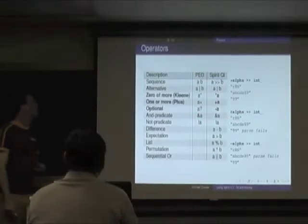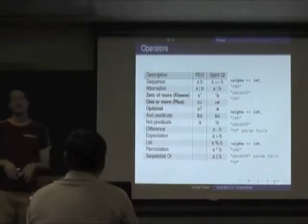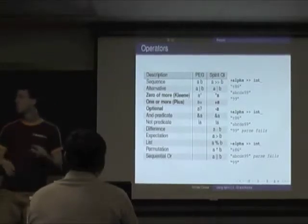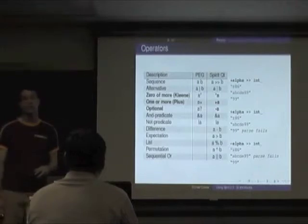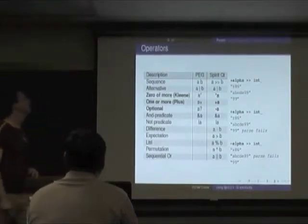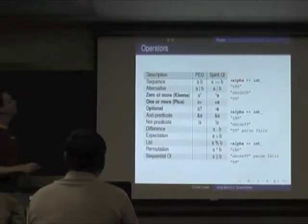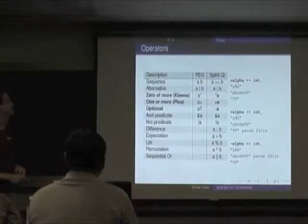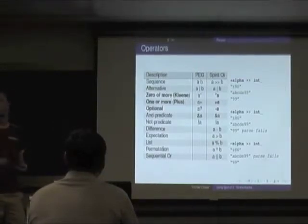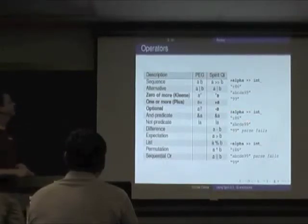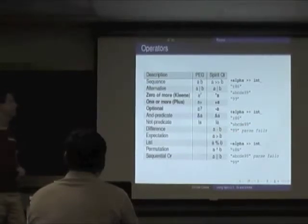Kleene star means zero or more of whatever that parser is. Here: zero or more alphas followed by an int — all three examples meet this condition. Plus means one or more, so the first two conditions pass, but the third fails because there's no alpha to match.